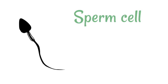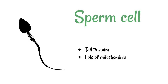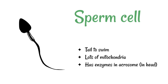Sperm cells are able to fuse with an egg cell, known as an ovum, to produce a zygote. They've got a tail to swim. They've got lots and lots of mitochondria, and they've also got enzymes in the head inside of something called the acrosome.